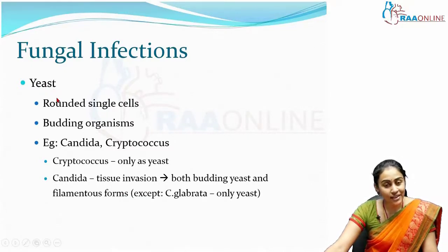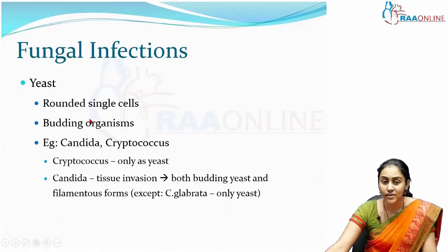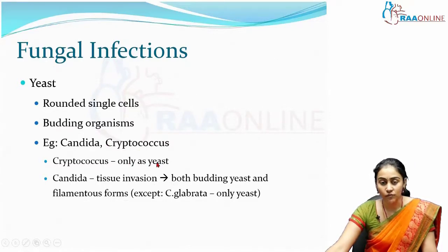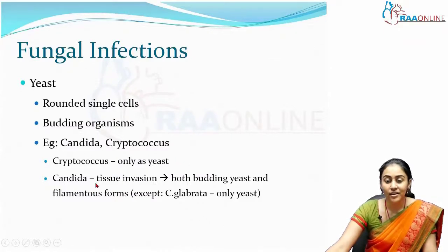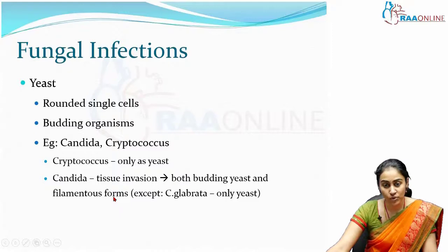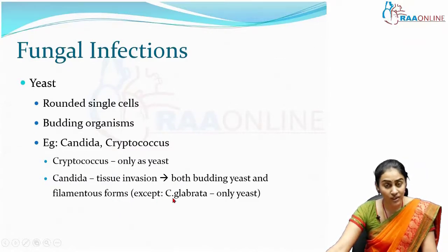The first category is yeasts — rounded single cells often seen as budding organisms. Common examples include Candida and Cryptococcus. Cryptococcus occurs only as a yeast form both in the environment and in tissue. Candida, however, on tissue invasion presents both as a budding yeast and as filamentous forms with hyphae and pseudohyphae. The only exception is Candida glabrata, which presents only as yeast both in the environment and tissue.